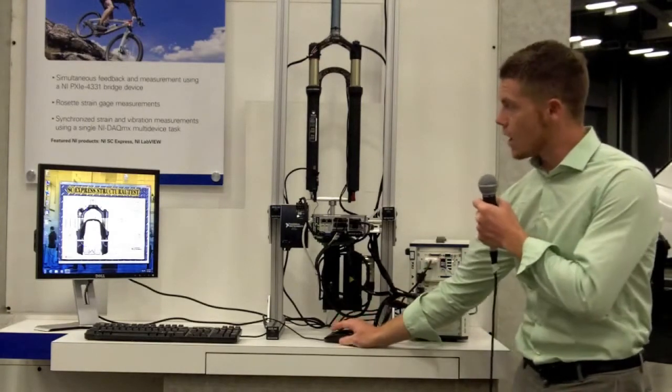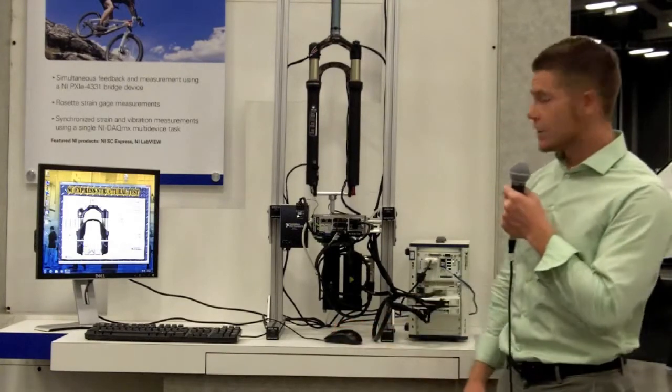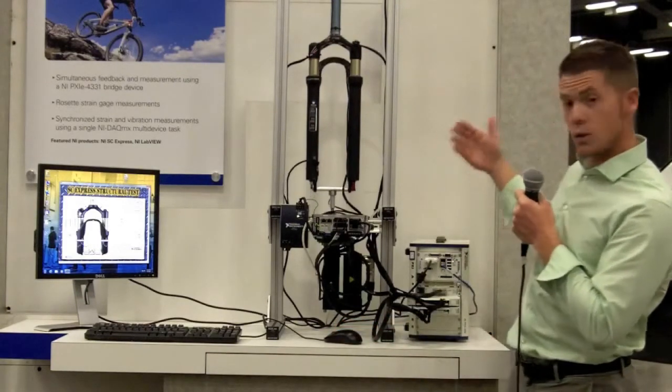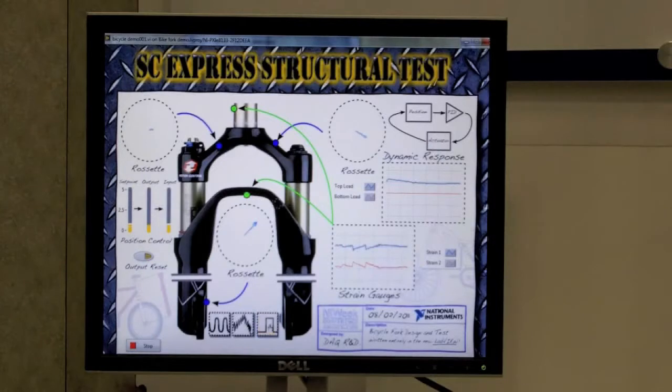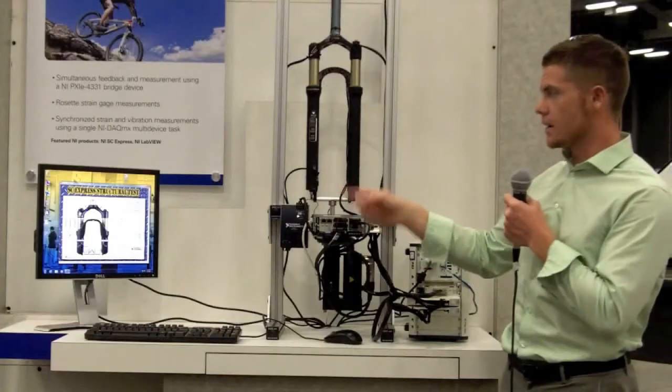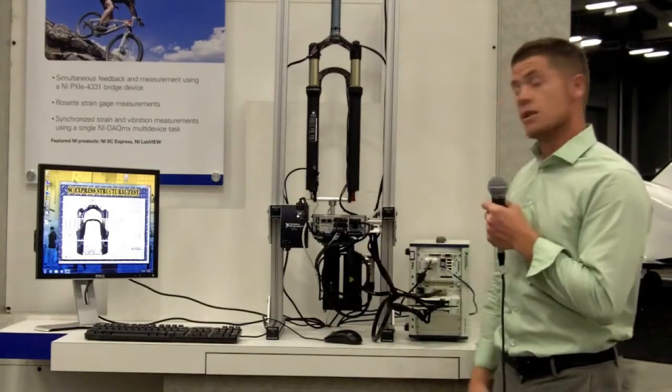So we're going to go ahead and run a quick demonstration of this. We've got a sinusoidal pattern that we're applying. We're closing this loop in the PXI system. But you'll see we're also measuring strain and load, and this data is highly correlated on the front panel.